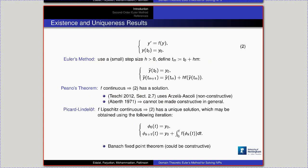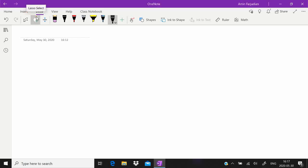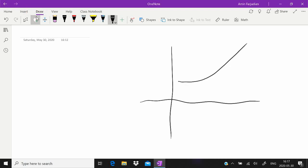Now I'll present some basic results about IVPs, going back to the general formulation where at time t₀ the value is y₀. In most textbooks on numerical methods for differential equations, one starts from Euler's method, which approximates the solution using piecewise affine approximations. If you start close to the solution and take small steps, and if the field is continuous, you won't deviate much from the real solution. That's the idea behind it.